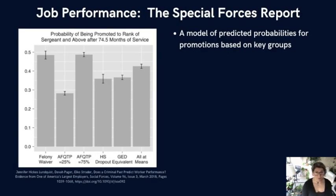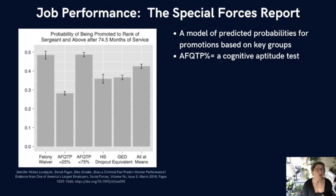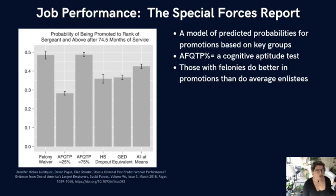Looking at the Special Forces Report, based on their predicted probability model with about 95% confidence intervals, after six years of service, those who entered the military with a felony waiver are more likely to have earned promotions compared to regular enlistees. This disparity is especially apparent when felons are compared to those who did poorly on the AFQT — the cognitive aptitude test given to enlistees, similar to an IQ test — or those who did not complete high school. Having a felony is correlated with promotion as much as doing well on a military IQ test.